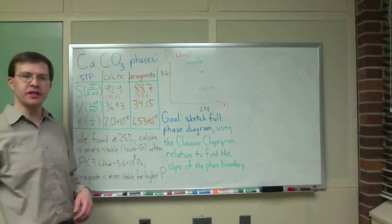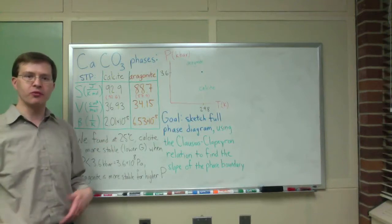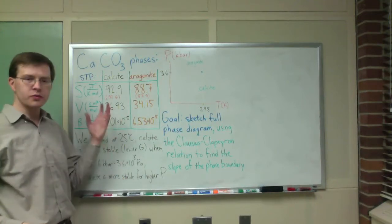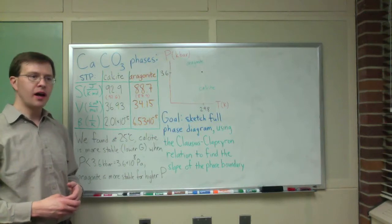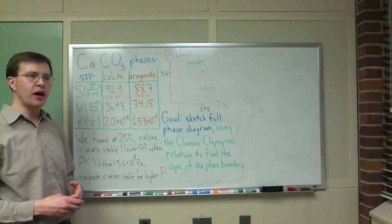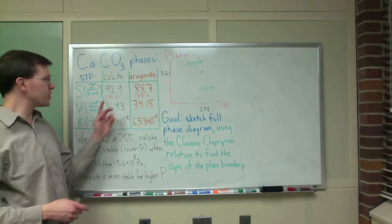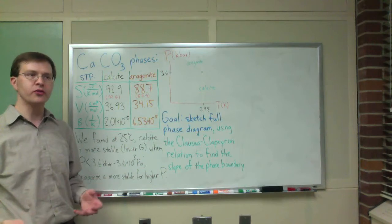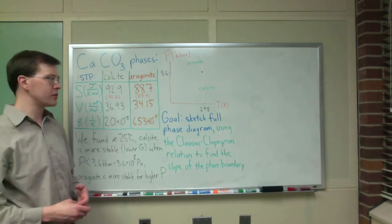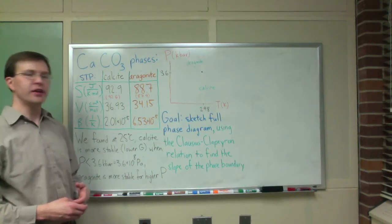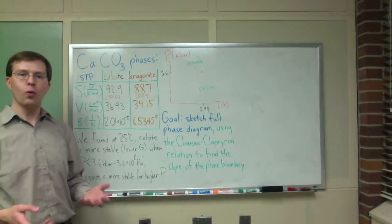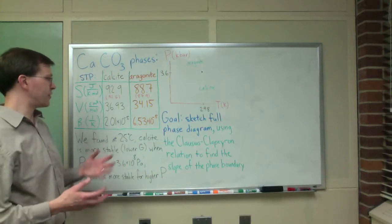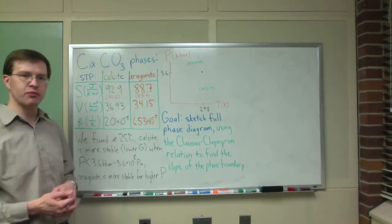We don't need beta for this example. We've got these well-characterized properties measured for each of these two phases at standard temperature and pressure: 25 degrees Celsius, 298 Kelvin, and one bar of pressure, 10 to the 5th pascals.